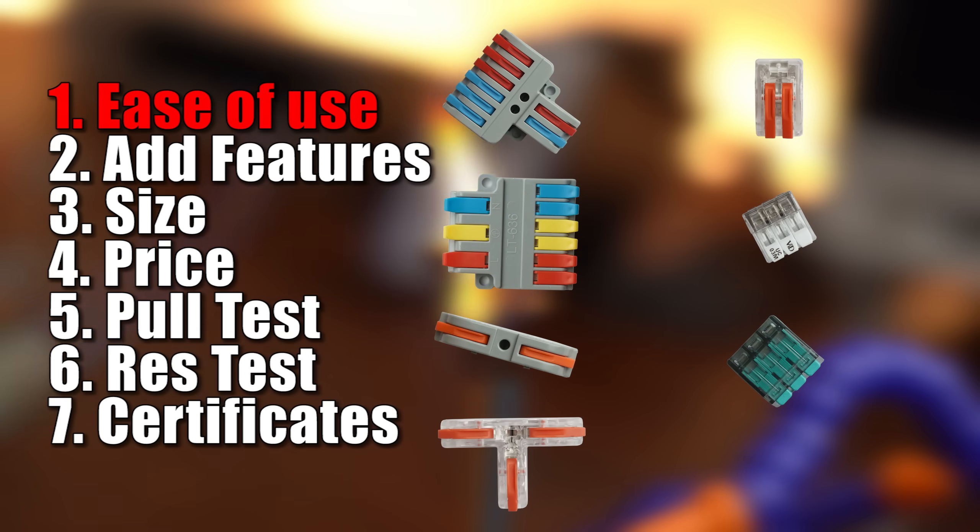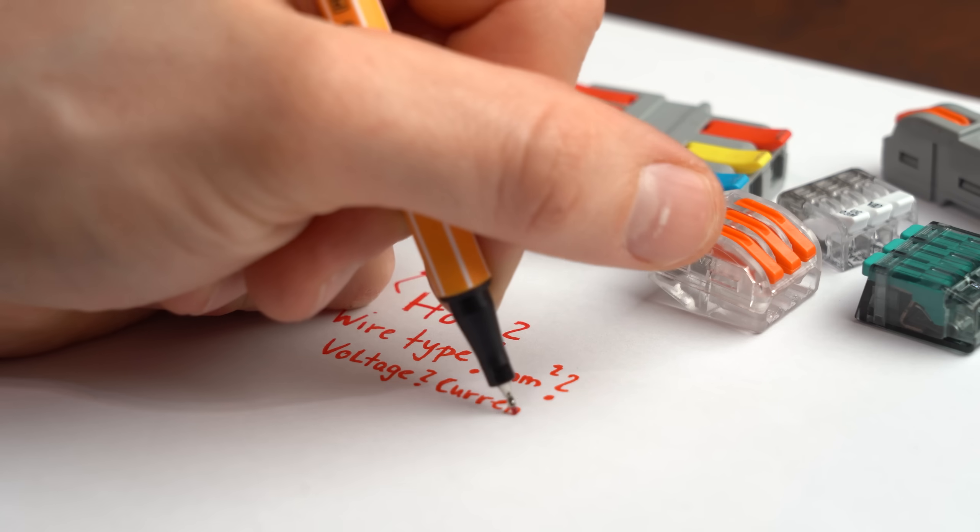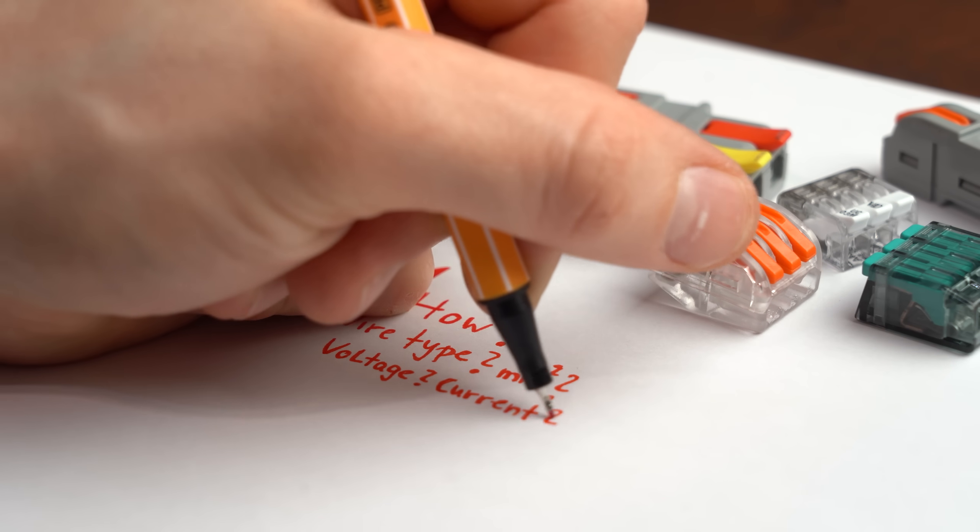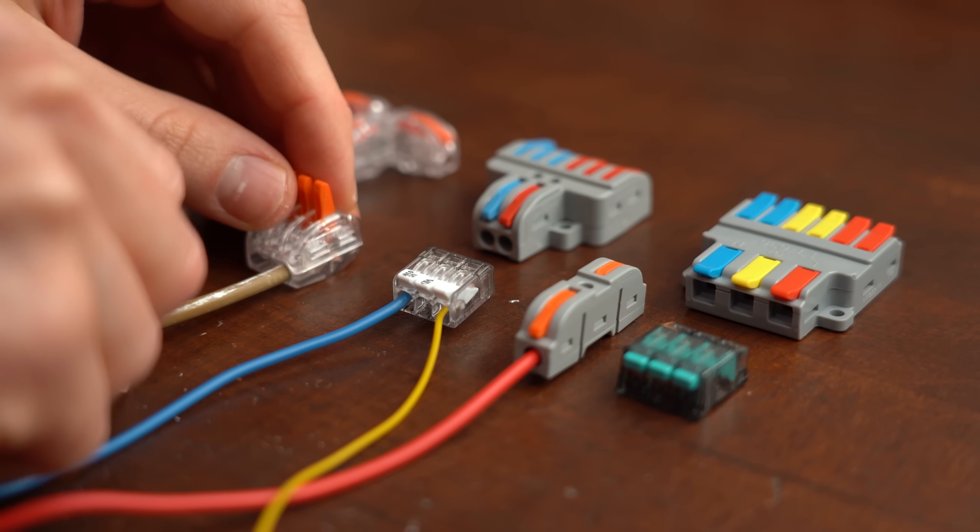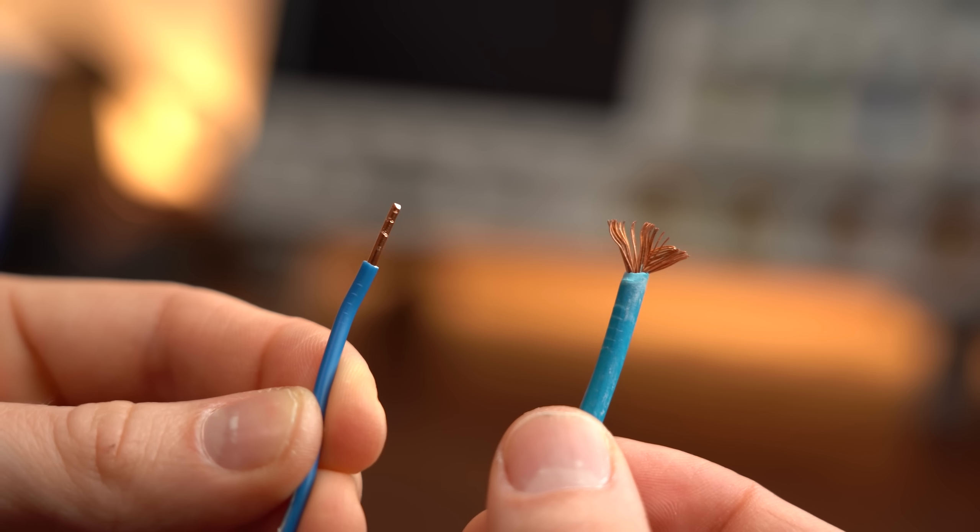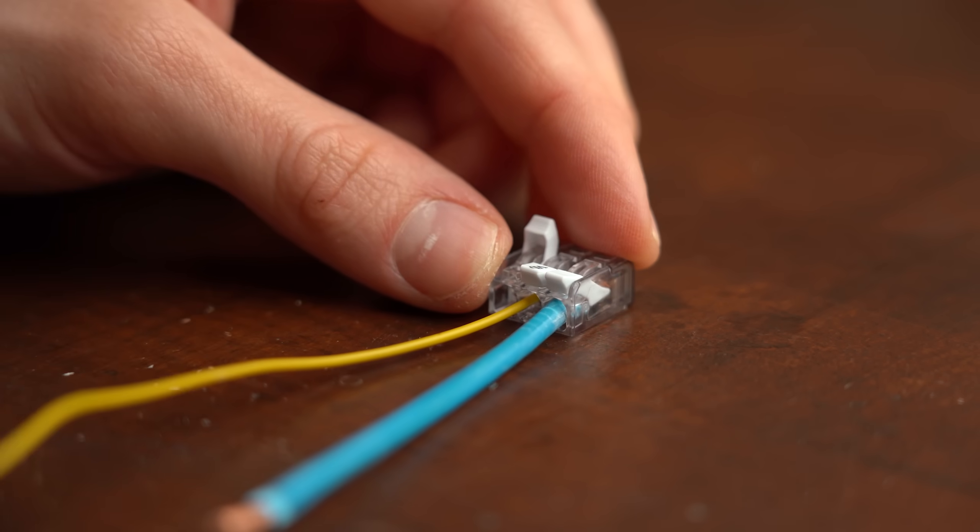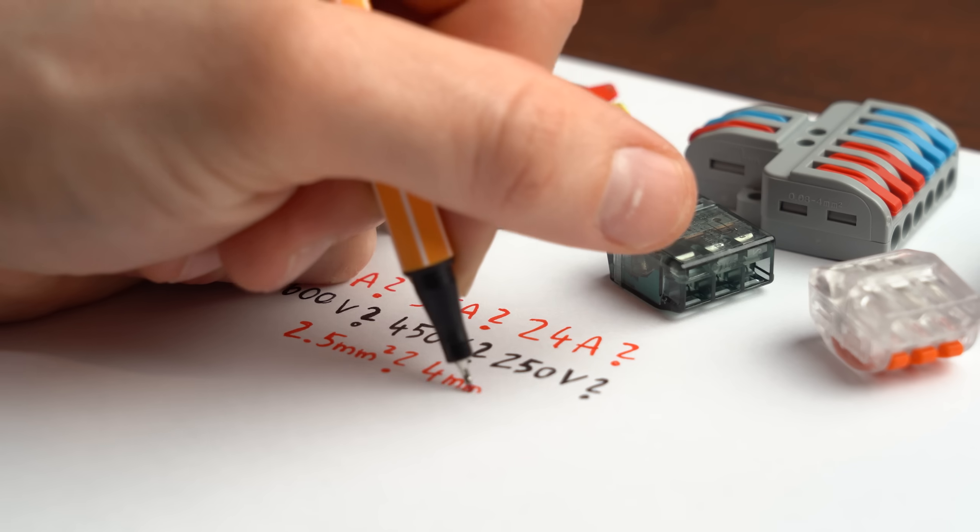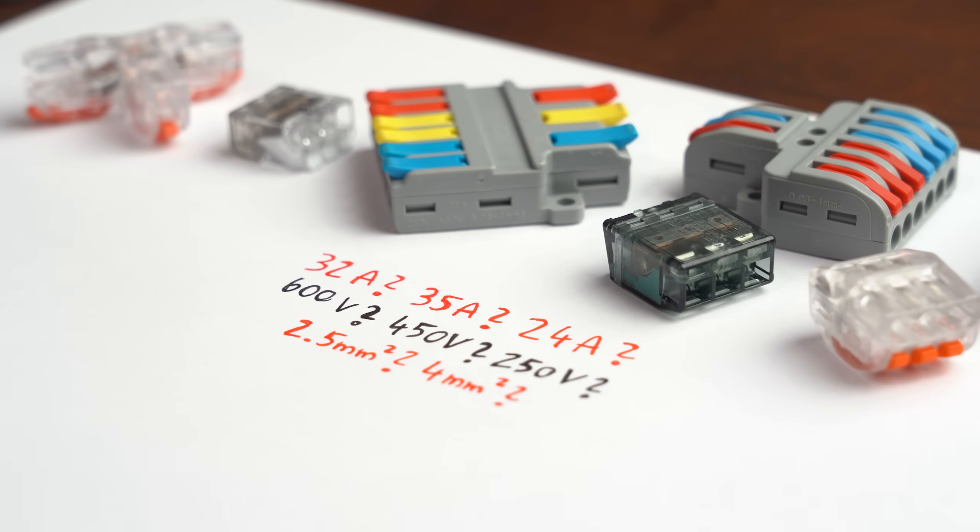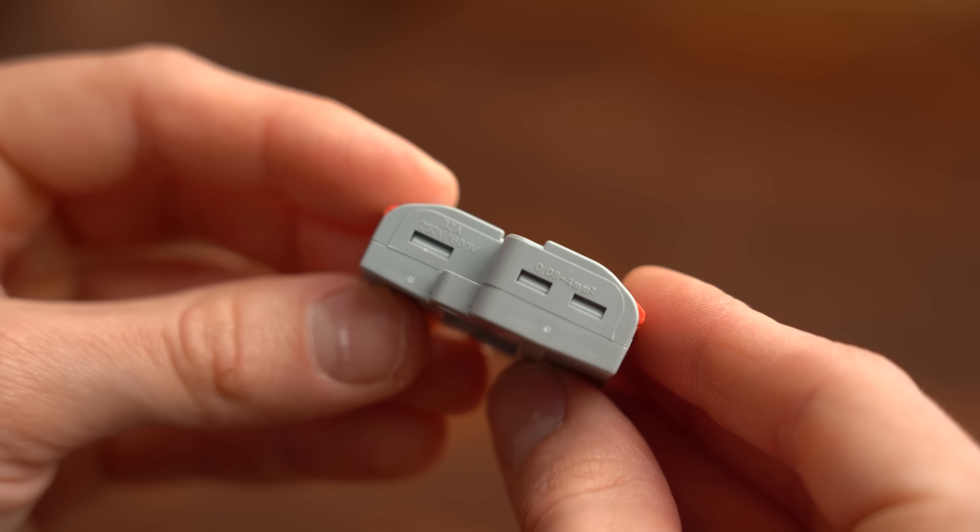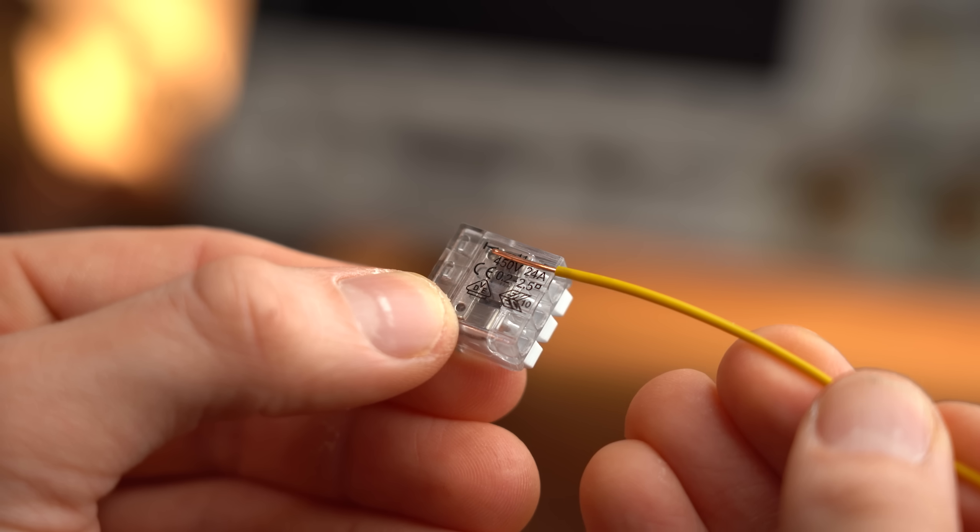So let's start off with ease of use, and for that I want you to imagine that I am handing you all these different connectors and you need to figure out how to use them, when you are allowed to use them, and with what kind of conductor. Now I think finding out how to use them is rather self-explanatory, and since they work with solid core wires as well as stranded wires, we do not have to worry about the conductor type either. But when it comes to the allowed cross section, applied voltage, and flowing current, then there are definitely differences between the connectors. And I am very happy to say that really all connectors come with those information on them. Most of them even tell you how much insulation you have to remove from the wire.